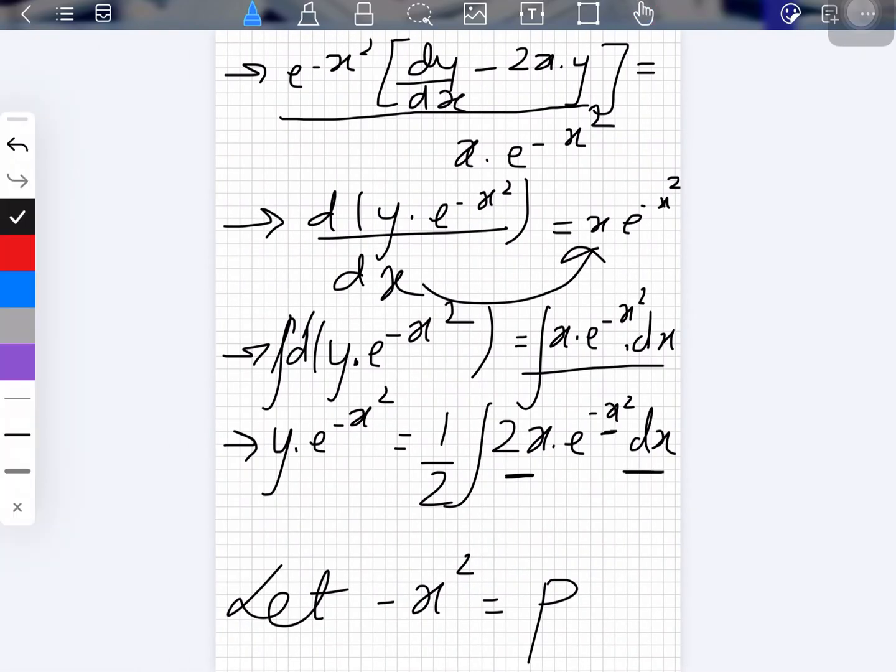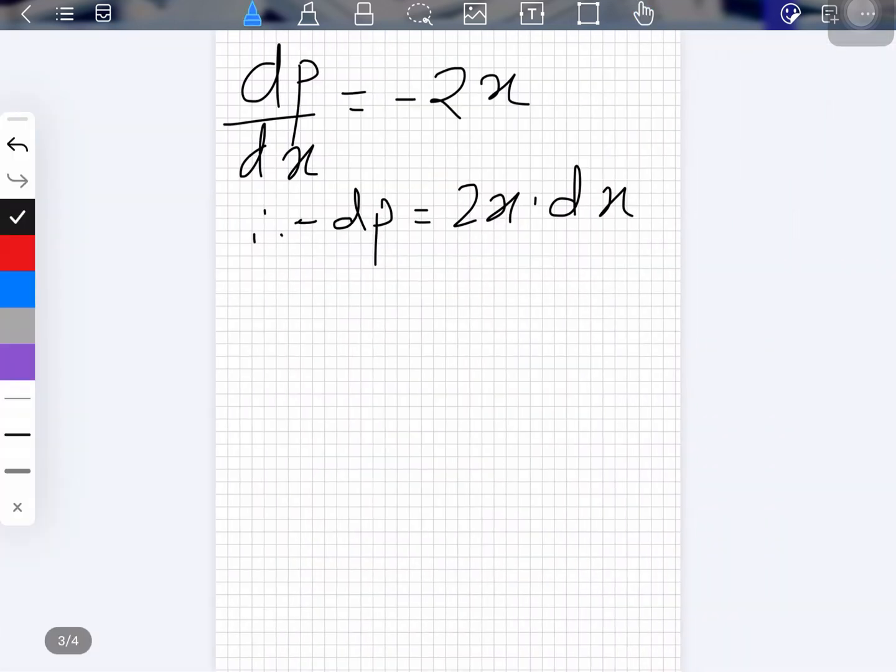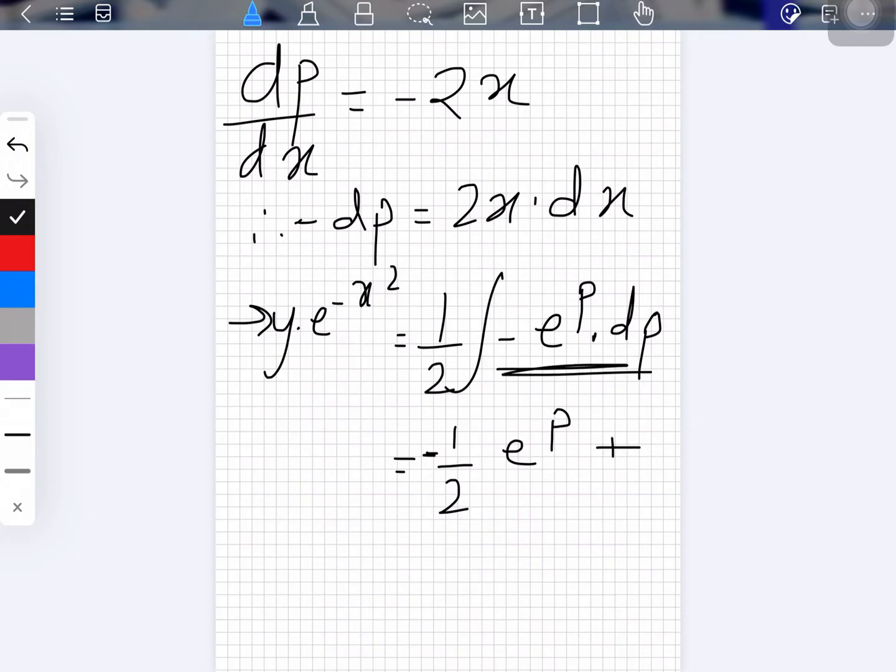So what we can do is, so the solution will be equal to what will it be. So it will be (1/2)∫-e^p dp. Let's not write the left-hand side now. -e^p, I think you know the value of this, it is very common, plus the integrating constant. I think we can write it here as well. Now let's replace the value of p with the original value containing x.